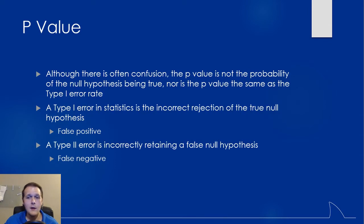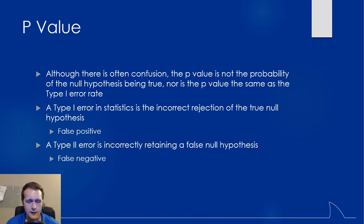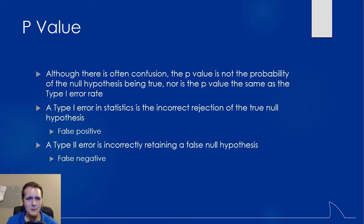Some people feel the p-value is saying this is just a probability of the null hypothesis being true — it's not the same thing. A type 1 error is when we incorrectly reject the null hypothesis. The null hypothesis was true, there's really no difference between the groups, but we rejected it anyway — it's called a false positive. Type 2 error is when you incorrectly retain the false null hypothesis — you say there is no difference between the groups when there actually was one. That's considered a false negative. The p-value is just saying what are the chances this result is due to chance alone — it's not telling you what your type 1 error rate is.